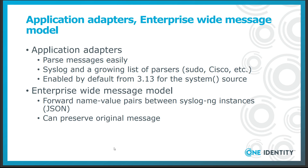The enterprise-wide message model allows forwarding name-value pairs between syslog.ng instances. It is made possible by using JSON formatting, and it can also forward the original raw message. This is important because by default syslog.ng does not send the original message, but what it can reconstruct from it using templates — the original, often broken, formatting is lost. However, some log analytics software expects to receive the broken message format instead of the standards-compliant one.